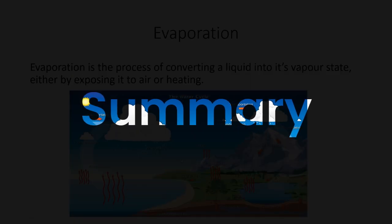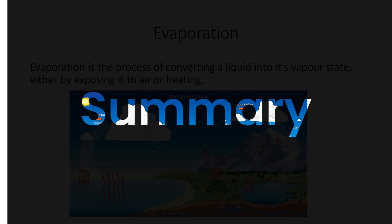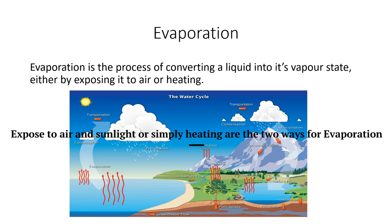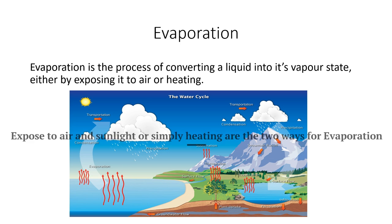So evaporation basically — a summary for you — it is a process of converting liquid, in this example water, into its vapor state. The two ways to change into a vapor state are either to expose it to air and sunlight, or to heat it or boil it.